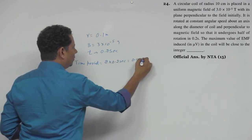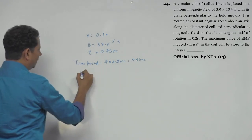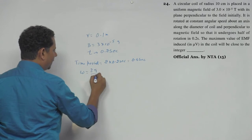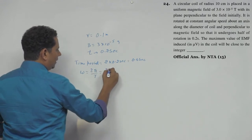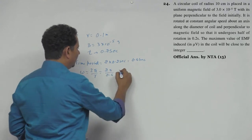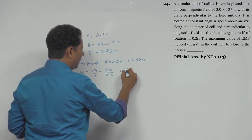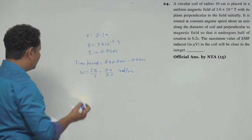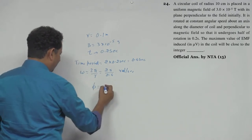Now using omega will be equal to 2pi by T, we can take this as 2pi divided by 0.4 second. This is your omega in radian per second. After this we need to find, so here simply phi is BA cos omega t.